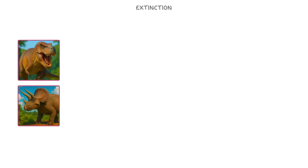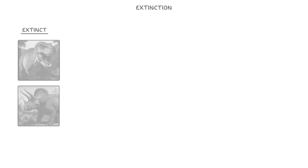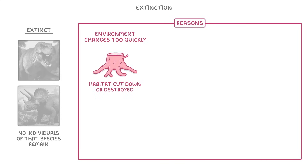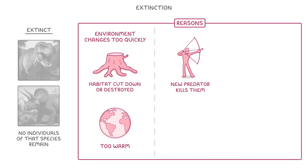The last thing we need to cover is extinction. We say that a species has gone extinct when no individuals of that species remain. There are loads of reasons why a species might go extinct. One of the main ones is that the environment changes too quickly — for example, if a species' habitat gets cut down or destroyed, or if the entire planet gets too warm too quickly. A species might also go extinct because a new predator arrives and kills them all, such as in the case of human hunting, which has already driven many species to extinction. It could also be due to a new disease that spreads through a population and kills them.